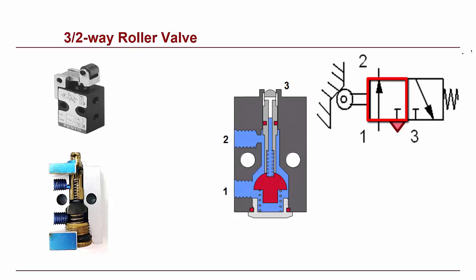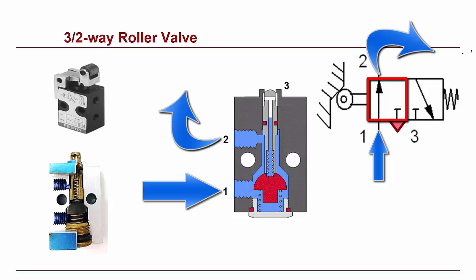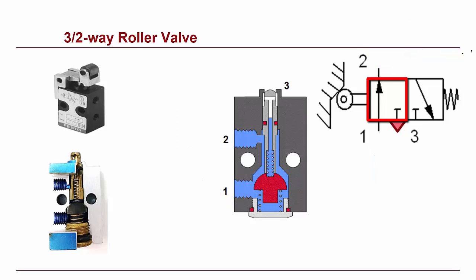When the roller valve is activated or switched over to another position, compressed air supply to port 1 is connected to port 2. Compressed air coming out of port 2 can be connected to the input port of the next pneumatic device and activate that device. Note that at this switching position, port 3 is blocked.